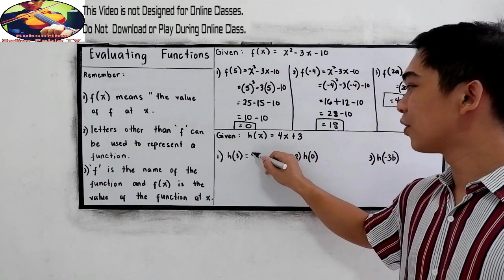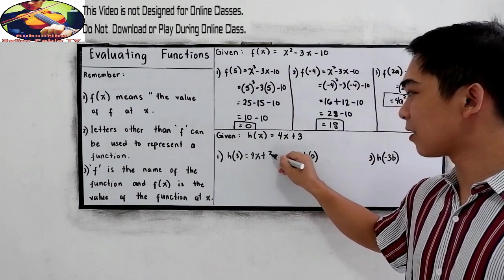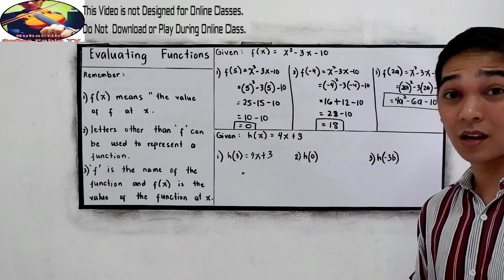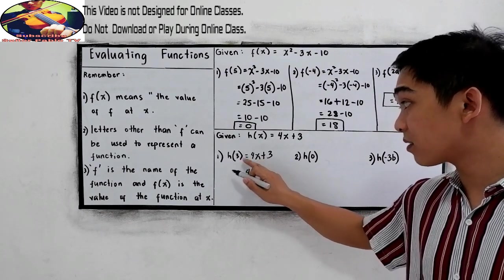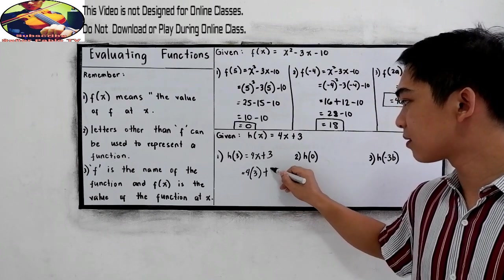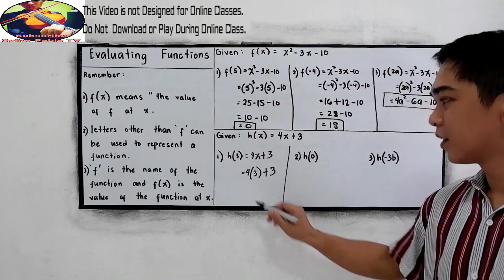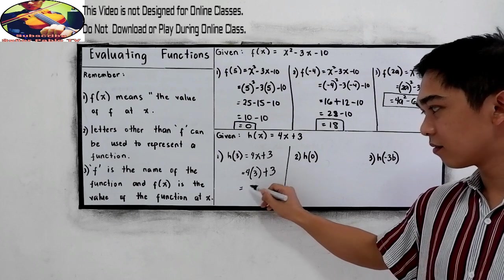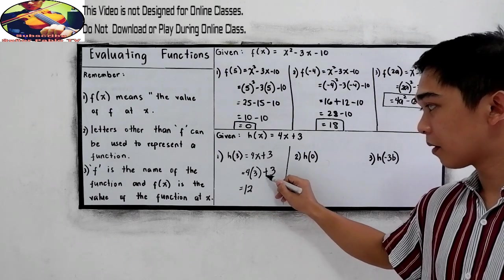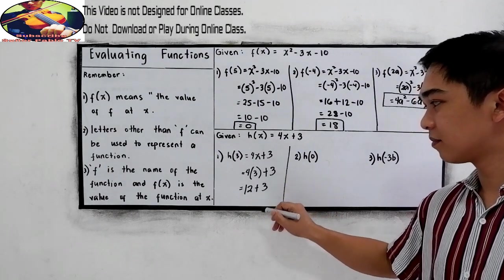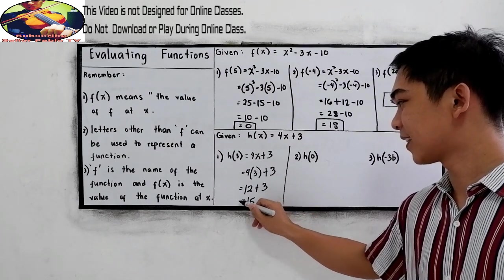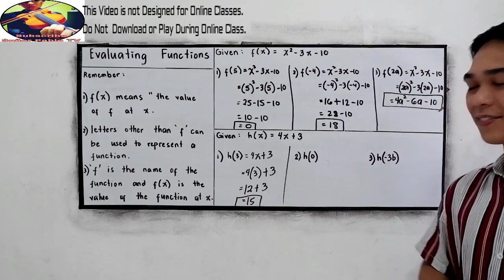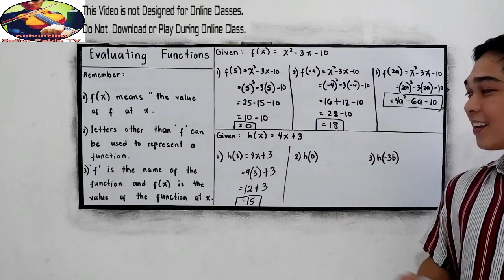Copy: 4x plus 3. And now, substitute. So, 4 times our x is 3, plus 3. 4 times 3, that is 12, plus 3. 12 plus 3, that is 15.